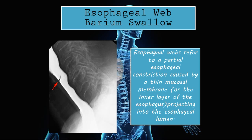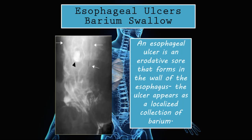When we have an esophageal web, we have a slight constriction in the esophagus because a piece of tissue juts into the lumen, made up of the innermost layer — the mucosa. That web constricts the lumen so food is not able to pass through that point, and the patient may present with dysphagia. This is what an esophageal web looks like on barium swallow.